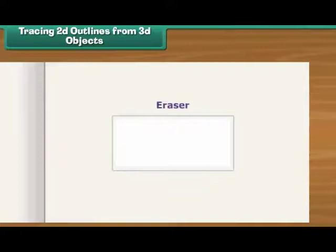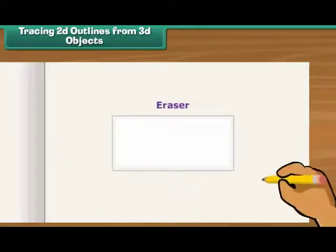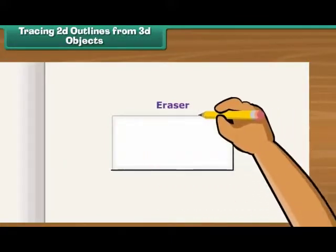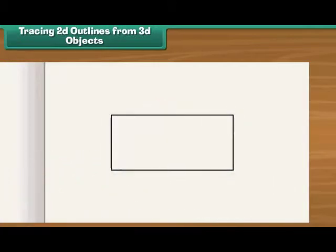Place an eraser on a sheet of paper. Draw lines along its outer edges. Remove the eraser. You can see a rectangle on the sheet.